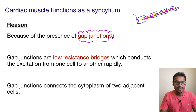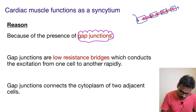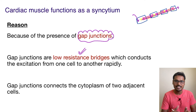These gap junctions make the cardiac muscle act like a syncytium. Gap junctions are rightly called low-resistance bridges, and they help in the conduction of excitation from one cell to another very rapidly. I hope that's clear — thank you for listening. If you like the video, drop a thumbs up and subscribe to the channel. Thank you so much.